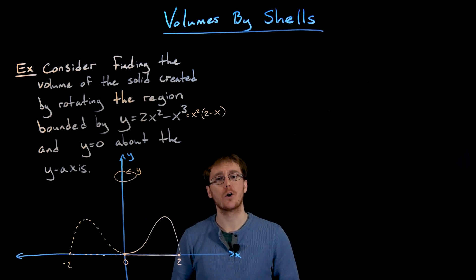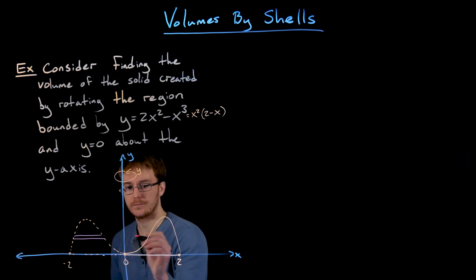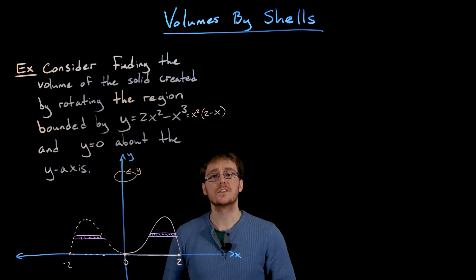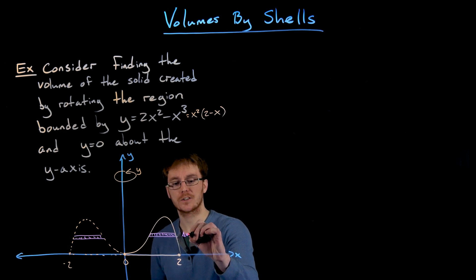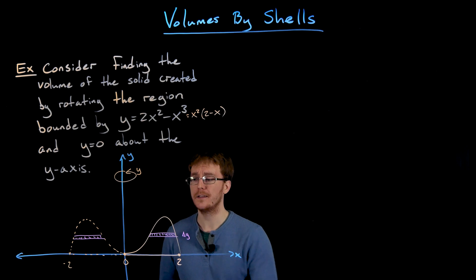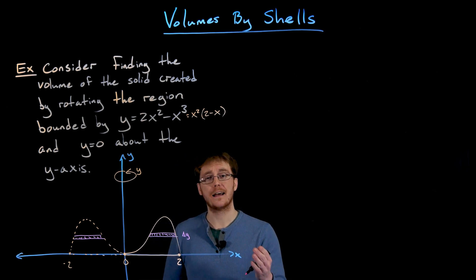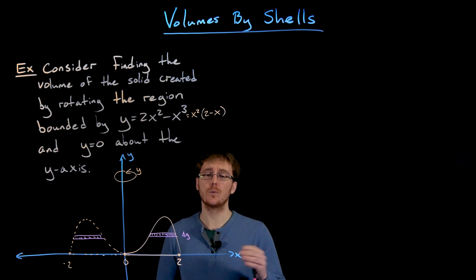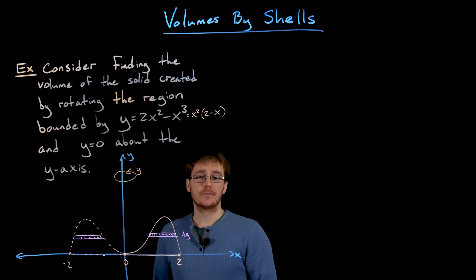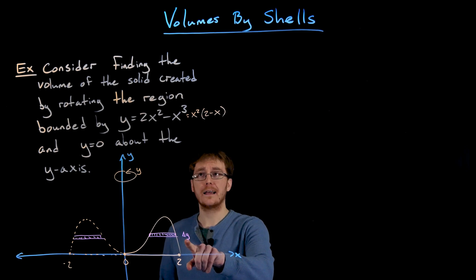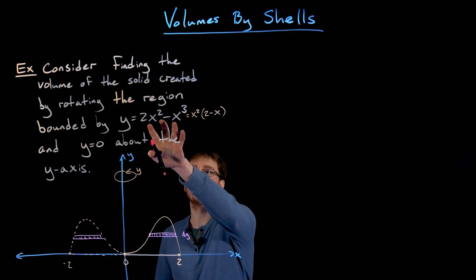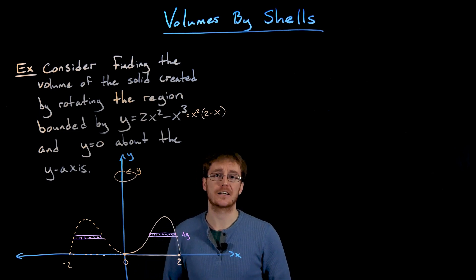A horizontal slice of this object has thickness delta y, so we'd have to integrate with respect to y. We can see there's a gap in the middle, so it ends up being a washer. The washer method gets really difficult because we'd have to find the outer and inner radius for each segment. Since we're integrating with respect to y, we'd have to solve the cubic equation for x in terms of y — very difficult.